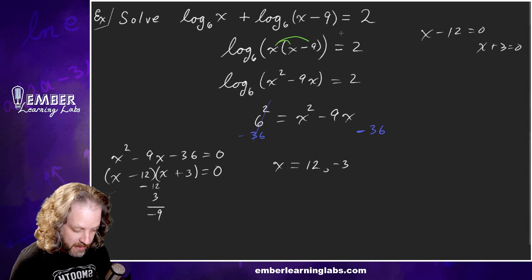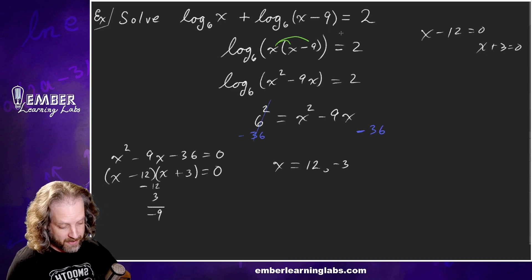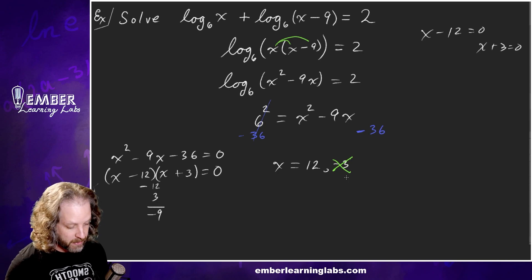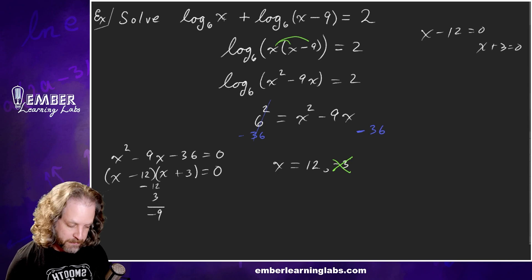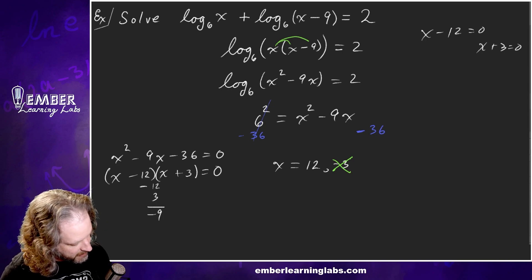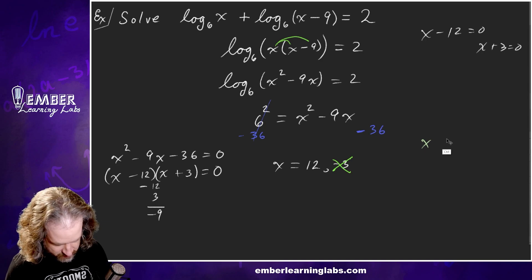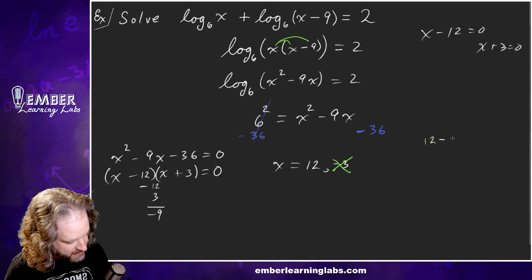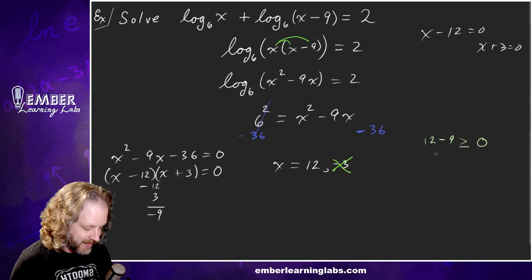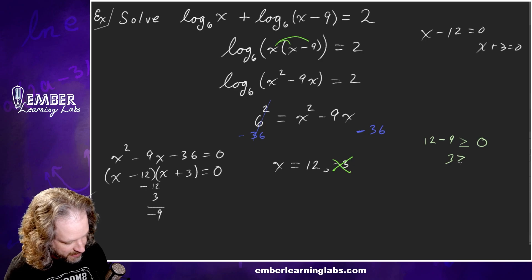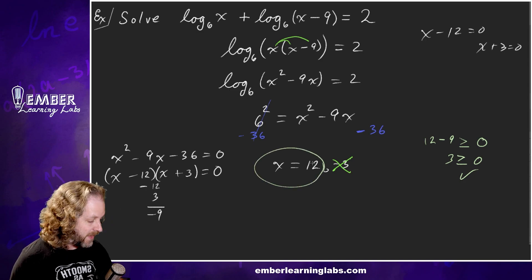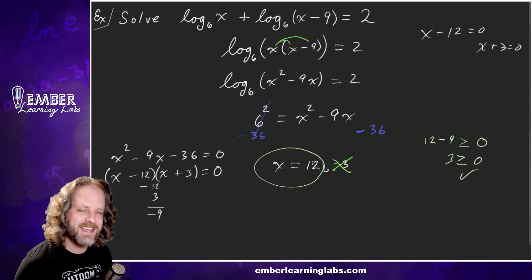We can't use both answers because negative values won't work inside a logarithm. X equals negative 3 is already negative, so we can throw that out. For X equals 12: plugging into X minus 9 gives 12 minus 9 equals 3, which is greater than zero — so it works. Our answer is X equals 12. Thanks for playing along — see you in the next one!